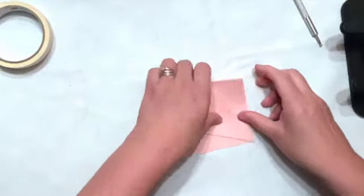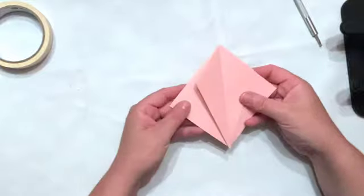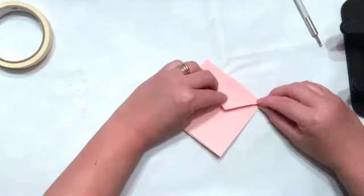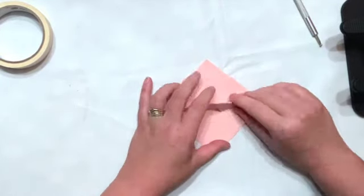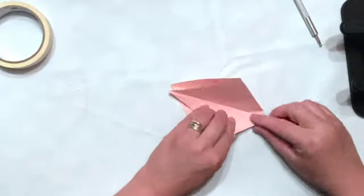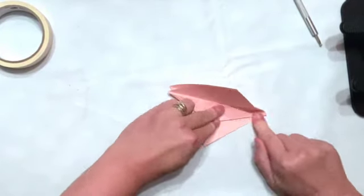There we go. So you've got the kite shape. And then you're going to do the same with the top pieces. Folding them back. So all the folds are underneath. So it's really difficult to explain verbally or in written instructions. So it's a lot better to watch and practice.